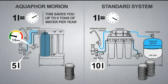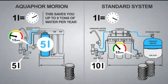Aquaphor Morion gives you a consistent supply of purified water. Its storage tank always holds at least 5 liters of purified water, while in conventional systems it depends on the pressure in the water mains.